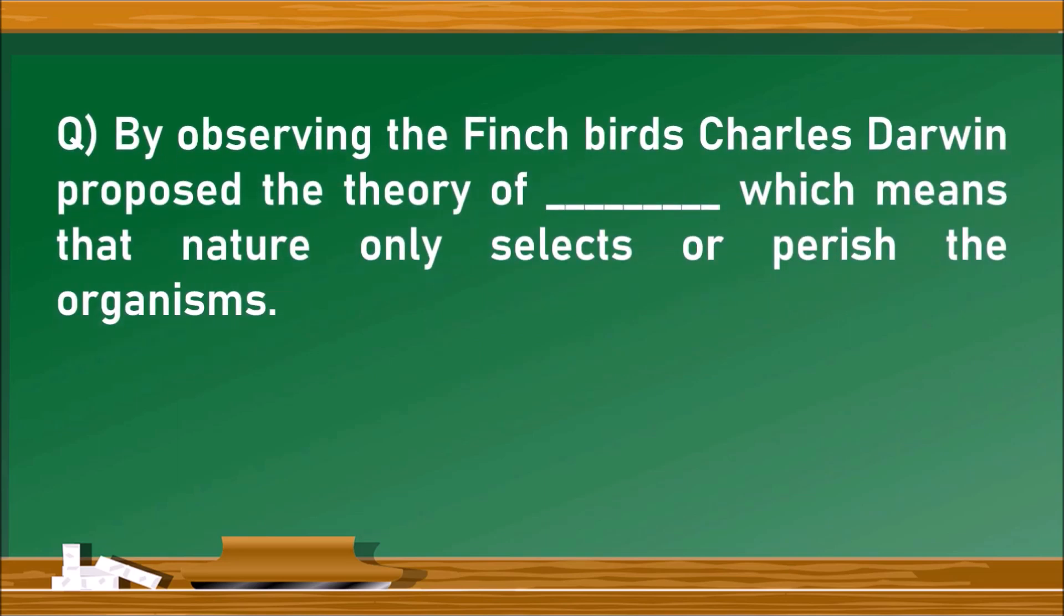Next question: By observing finch birds, Charles Darwin proposed the theory of natural selection, which means that nature only selects or perishes organisms. Nature itself selects the organisms which cope with the environment.